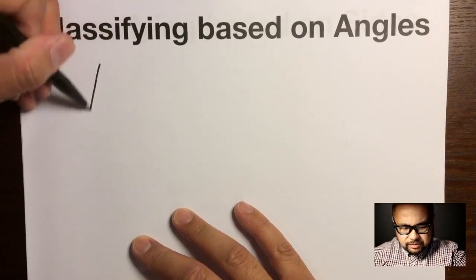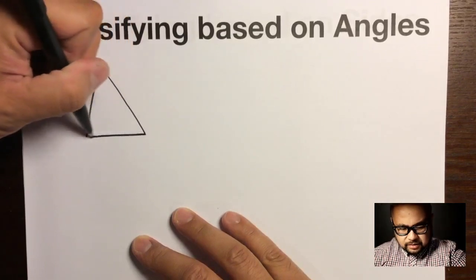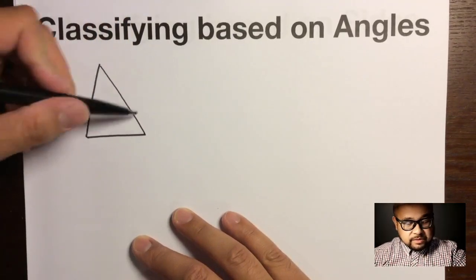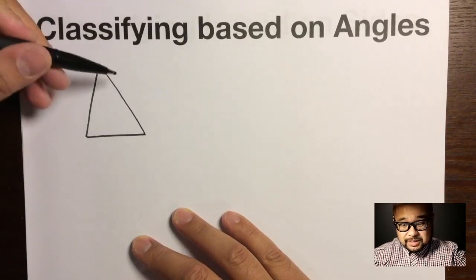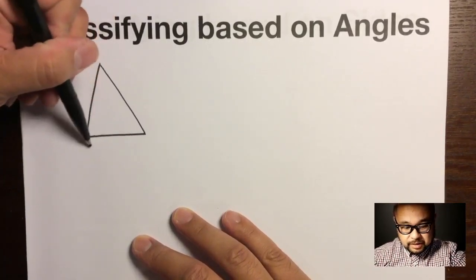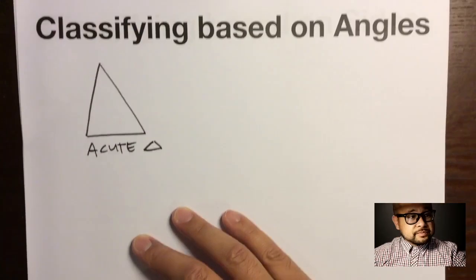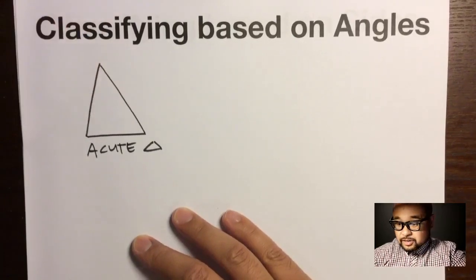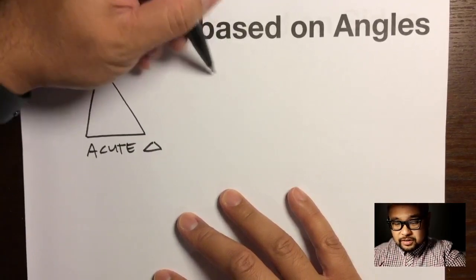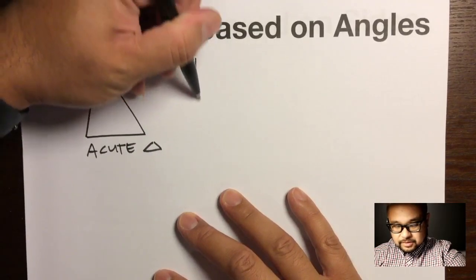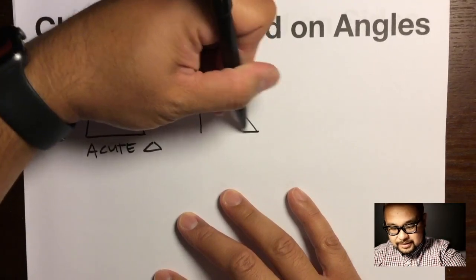If I draw this triangle, look at all three of these angles — they all appear to be less than 90 degrees. So this type of triangle is called an acute triangle, because all angles are acute.